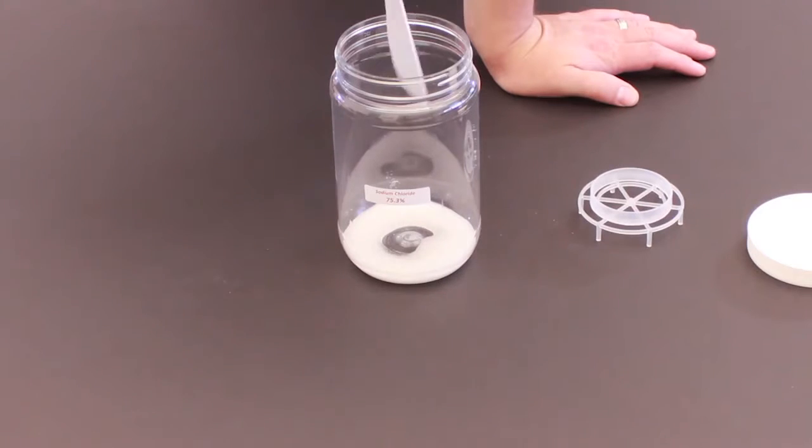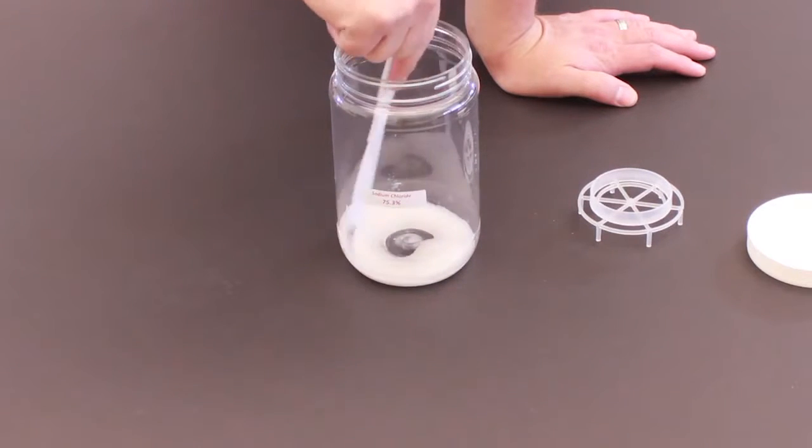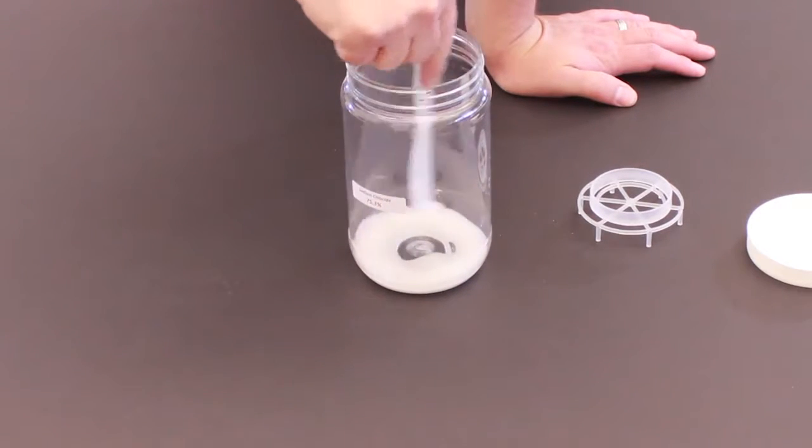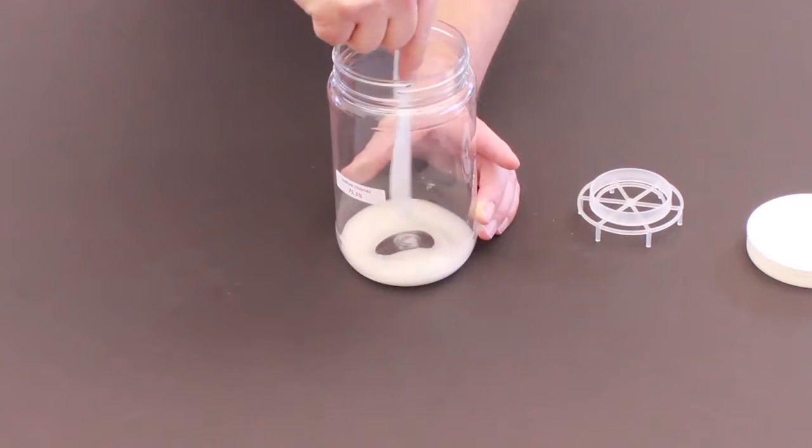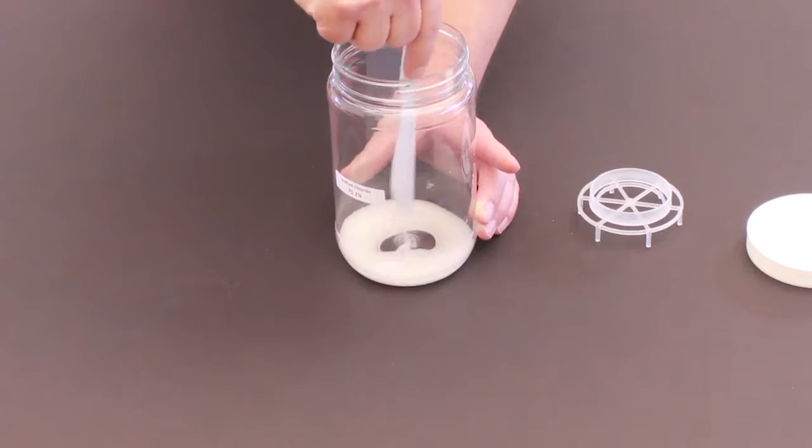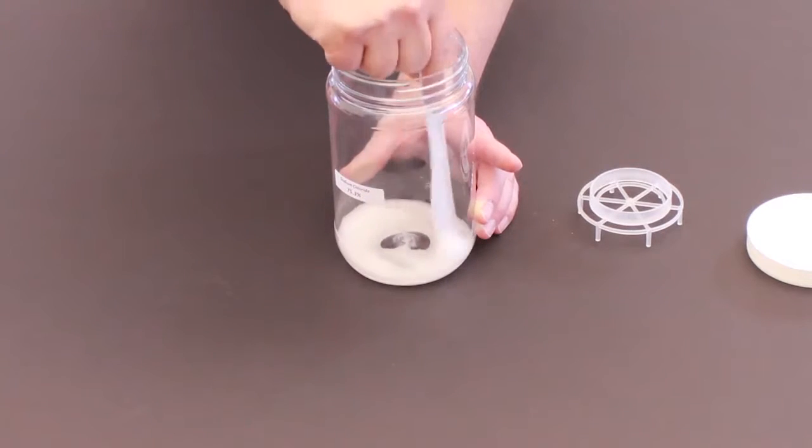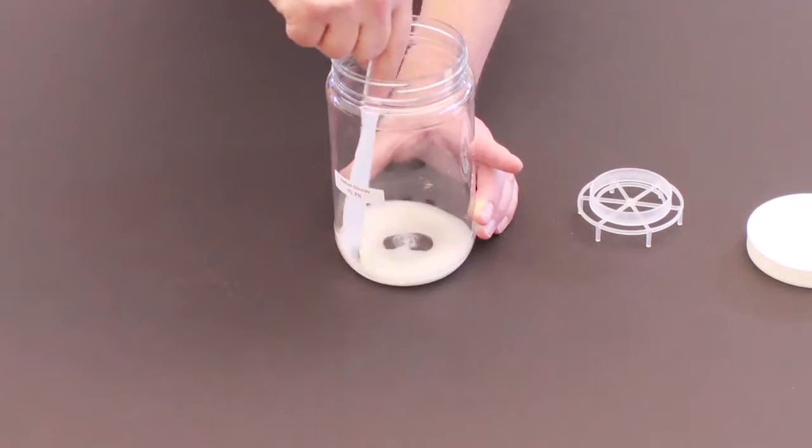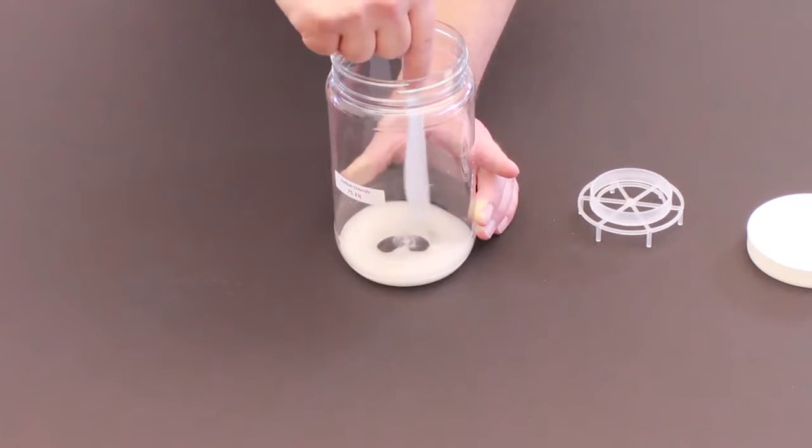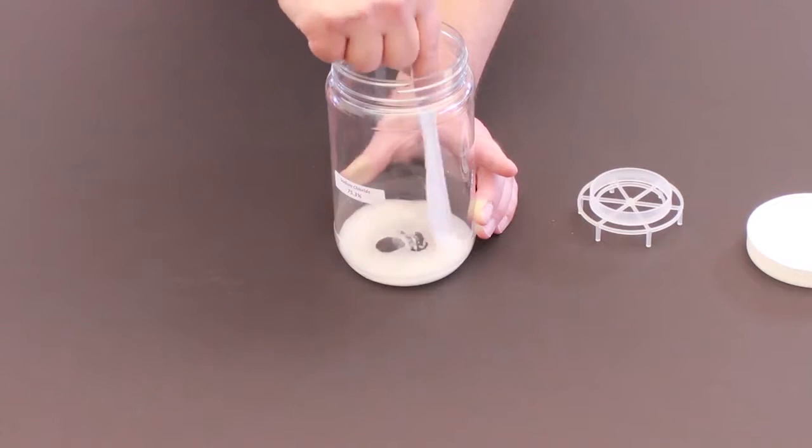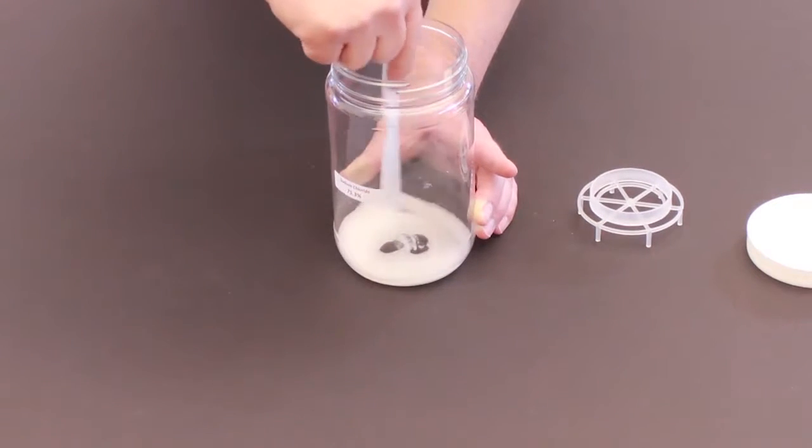We dump the water into the container and then we're going to gently mix it together. I have a little plastic knife I'm using. We want to make sure the water is evenly distributed across all the salts. The goal is to make a non-too-liquid or non-too-solid mixture called a slurry, and there's photos in the instruction manual that'll help you determine this.